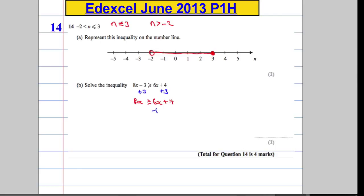Taking 6x from both sides of that inequality, we get 2x is greater than or equal to 7. Then finally, to work out x, I'm going to divide by 2.